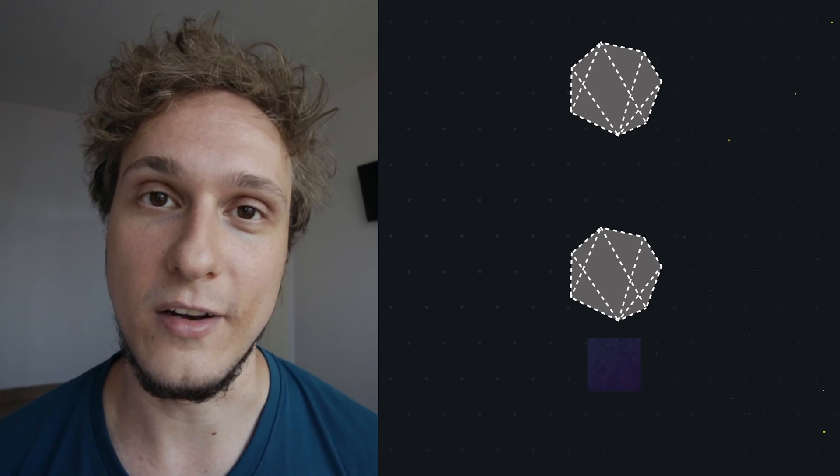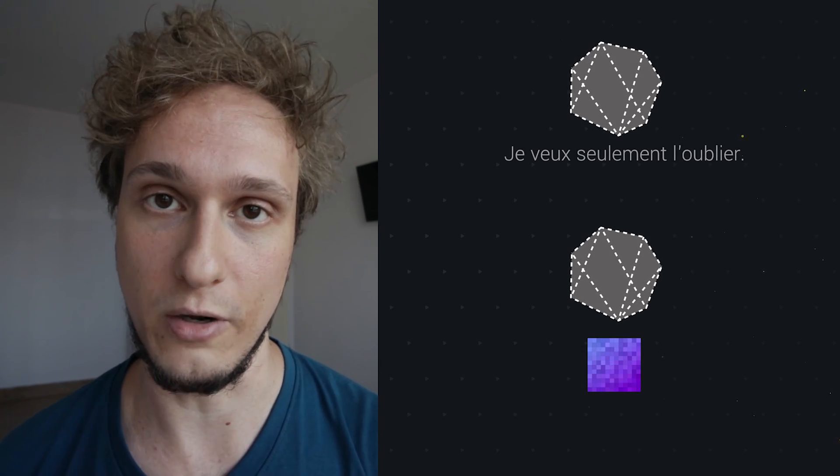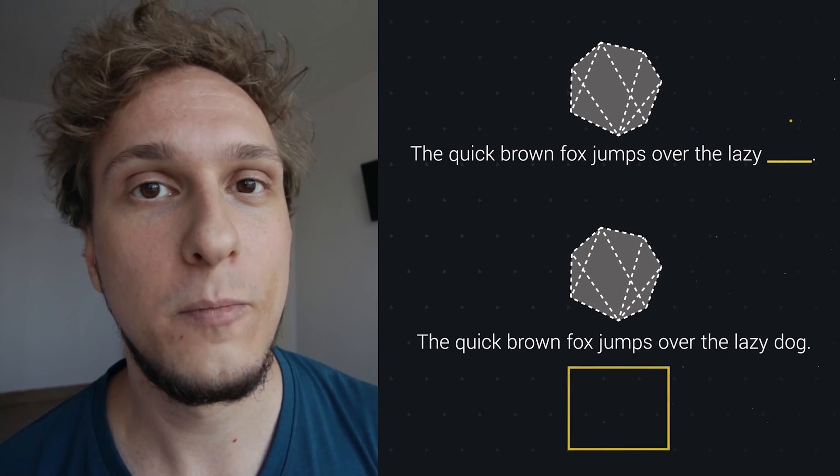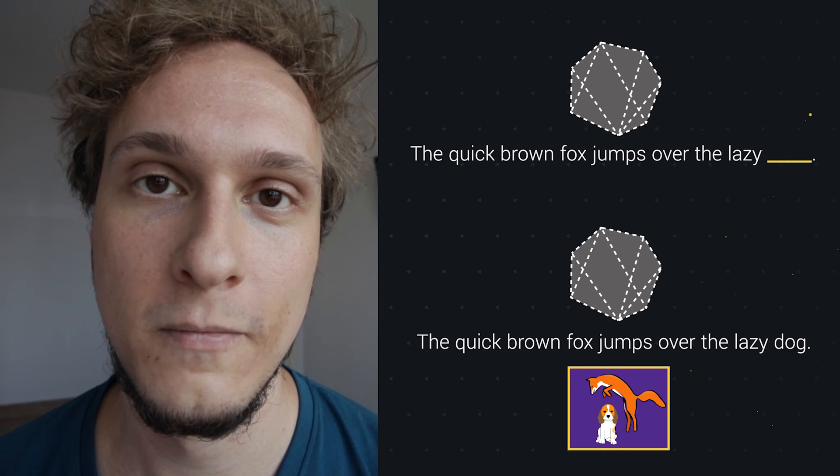DALL-E is a version of that model, retrained for image generation instead of text generation. So instead of asking 'given the following sentence, predict the next word,' DALL-E asks 'given the following sentence, predict an image depicting it.' We don't yet know the exact architecture of DALL-E, how many hours were spent training it, how much it cost, or how many images were used for training. But what we do know is that DALL-E is the most advanced seven-year-old nephew with crayons that this planet has seen to date.